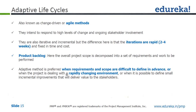The adaptive method is preferred when requirements and scope are difficult to define in advance, or when the project is dealing with a rapidly changing environment. Agile is getting a lot of traction for these reasons. It is also preferred when it is possible to define small incremental improvements that deliver value to stakeholders. The good part is ongoing stakeholder involvement ensures immediate feedback — you don't have to wait two to four months as in iterative work.